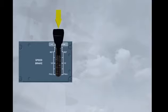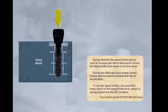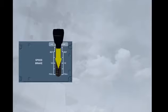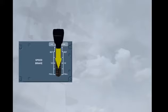To use the speed brakes, you must first press down on the speed brake lever, which is spring-loaded into the retracted position. The speed brake lever can then be moved rearwards to any position, depending on the amount of drag required. With the autopilot engaged, the maximum speed brake deflection available is approximately half, even with the speed brake lever moved fully back. The speed brake retraction rate is reduced when flying at high speed.